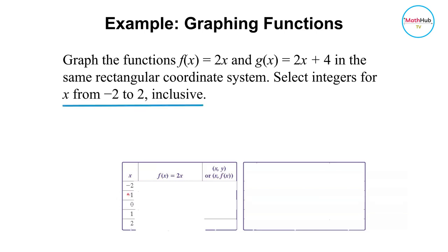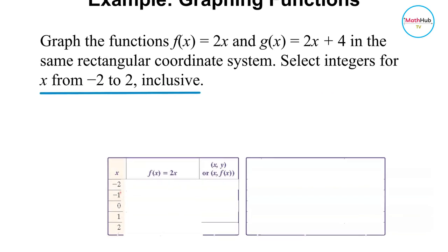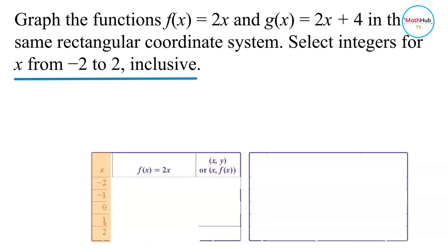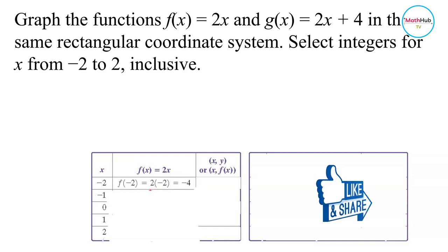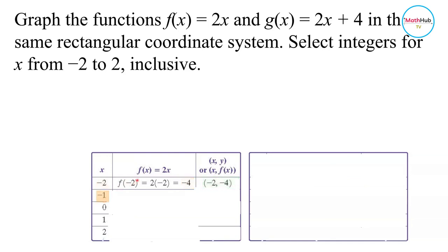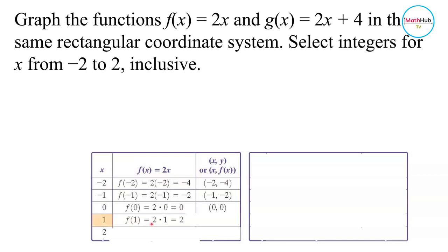For instance, if we select integers from negative two to two inclusive — so the integers are negative two, negative one, zero, one, and two — these are the x values, and we compute f(x) by plugging in these values to the expression. So: two times negative two equals negative four, giving ordered pair (−2, −4). Two times negative one equals negative two, giving ordered pair (−1, −2). Two times zero is zero, so we have (0, 0). Two times one is two, giving (1, 2). And two times two is four, giving ordered pair (2, 4).